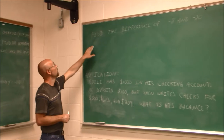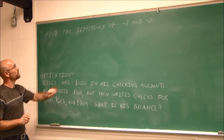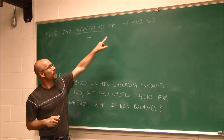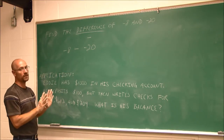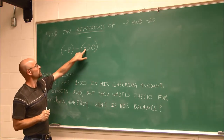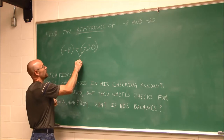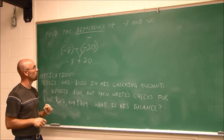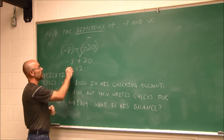Let's move to application problems — word problems. Find the difference of negative 8 and negative 20. The word difference tells me to subtract. I put the numbers in parentheses: negative 8 minus negative 20. Two adjacent negatives — the opposite of negative 20 is positive 20. Different signs, find the difference: 20 minus 8 is 12. The larger value is positive, so the answer is positive 12.